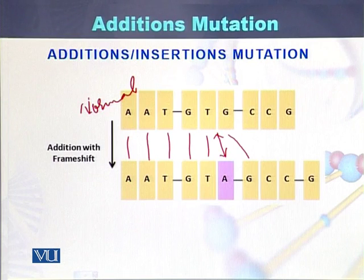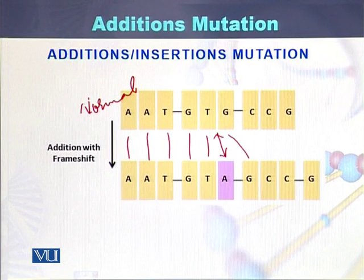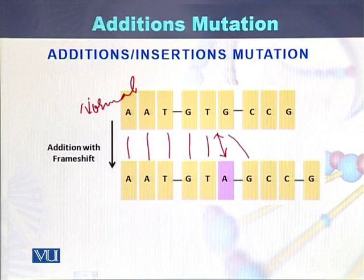So when there is addition of a nucleotide, that can be in the form of a single nucleotide or it can be in the form of multiple nucleotides. Such mutations are called addition mutations.